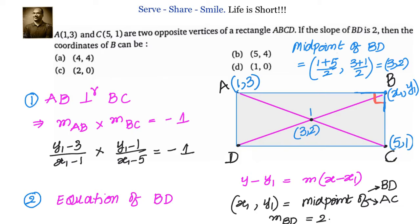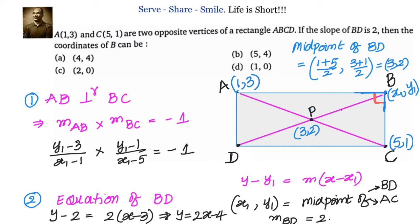Now we have a point on BD and we know the slope, so we use point-slope form: Y minus 2 equals 2 times X minus 3. Simplifying, this gives Y equals 2X minus 4. Since X1, Y1 is a point on BD, it satisfies this equation, so we can write Y1 equals 2X1 minus 4.